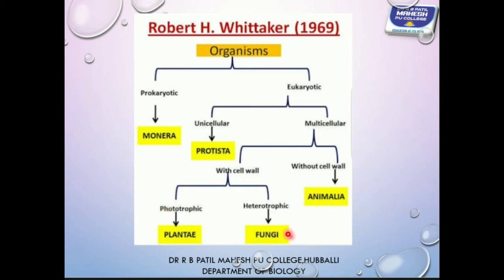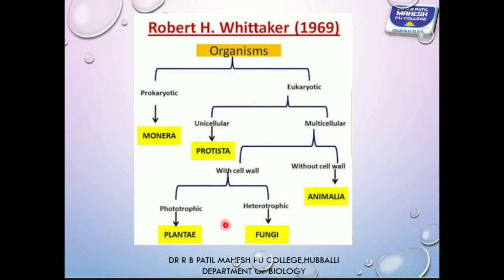One contrasting difference between Kingdom Plantae and Kingdom Fungi: Plantae are multicellular eukaryotic cells with a cell wall, but they are phototrophic or autotrophic — they can synthesize their own food by photosynthesis. Whereas Fungi are multicellular eukaryotic cells with a cell wall, but they are heterotrophic or saprophytic, dependent on other living organisms for survival.